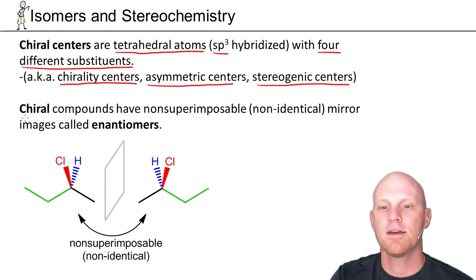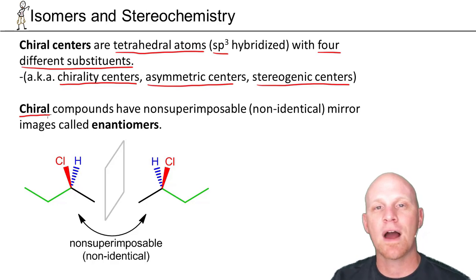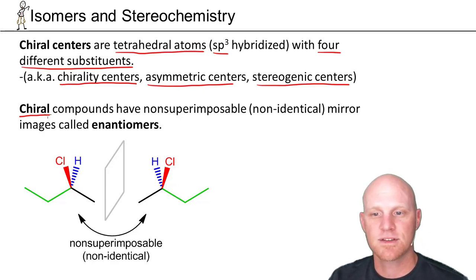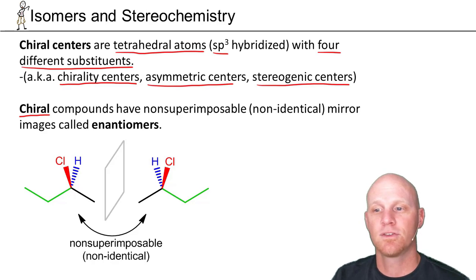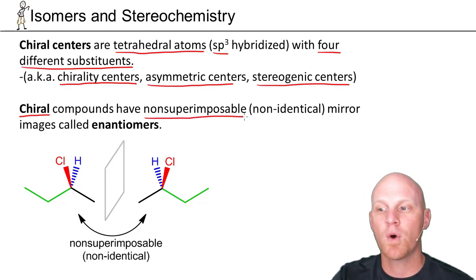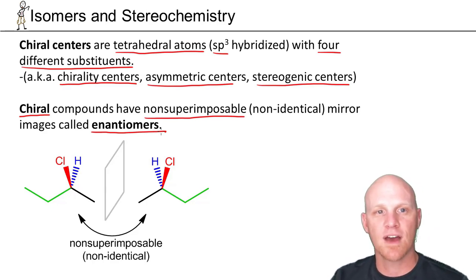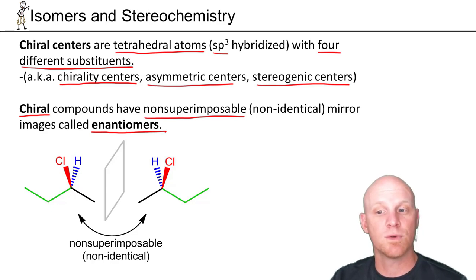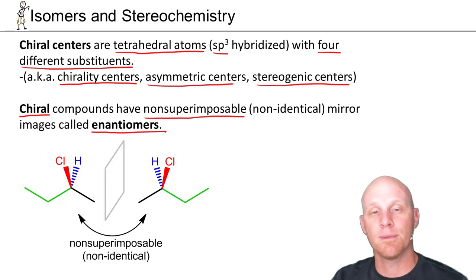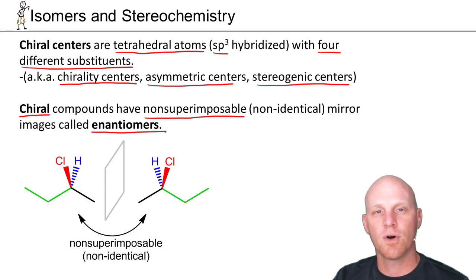If you have a chiral center, there's a good chance the molecule has a property called chirality. Chiral refers to a compound and its mirror image not being identical — not being superimposable. We say chiral compounds have non-superimposable mirror images, and we call these two mirror images enantiomers. Just like the word twin — there are only ever two enantiomers. We'll contrast this with achiral compounds, where the compound and its mirror image are identical and perfectly superimposable.